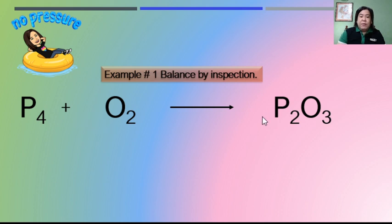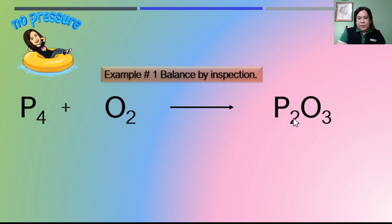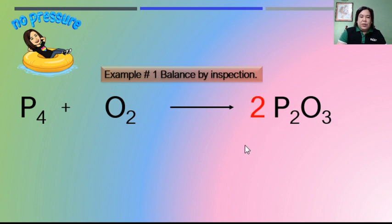We balance a chemical equation by putting a numerical coefficient before the symbol of the element or compound. When balancing, don't start with too large a coefficient because you may need to reduce it later. We have four phosphorus to two phosphorus — both even numbers — and two oxygen on the reactant side versus three oxygen on the product side. When you see an even and odd number like two and three, tackle that first. Add a coefficient of two before the product compound: two times two gives four phosphorus, and two times three gives six oxygen atoms.